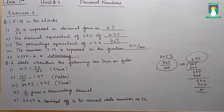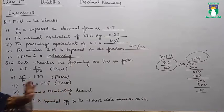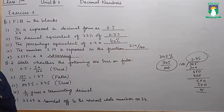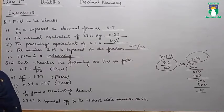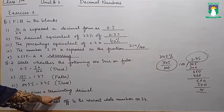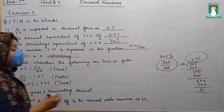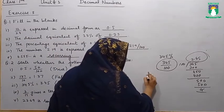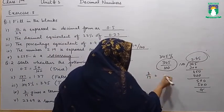Now students, in the 4th statement: 3 over 17 gives a terminating decimal. What is a terminating decimal? As explained in the last video, a terminating decimal is one where the decimal part has a finite, countable number of digits. We will divide 3 by 17 to check whether it is terminating or not.